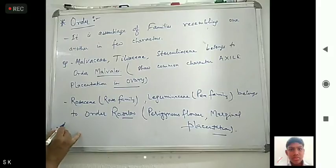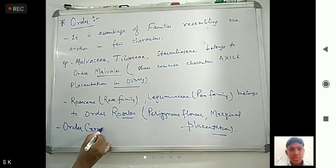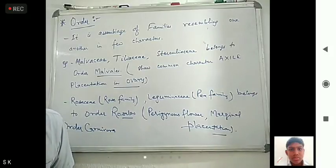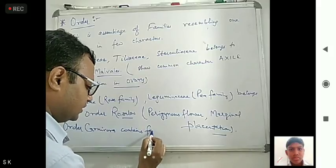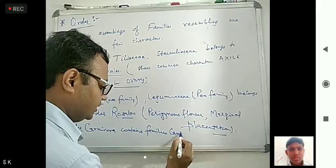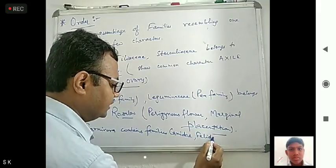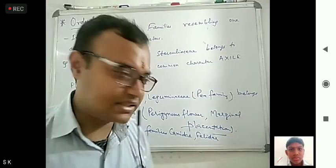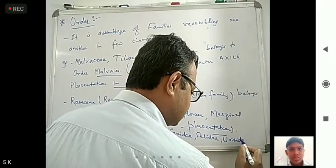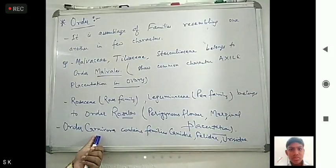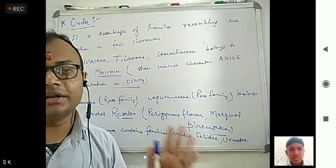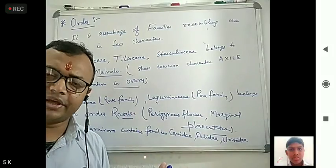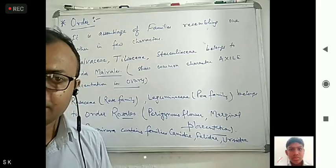In animals, Order Carnivora contains families Canidae, Felidae, and Ursidae. Regarding naming rules, in plants, order names end with the suffix '-ales' — for example, Malvales, Rosales. In animals, different suffixes are used, so there is no proper fixed rule.